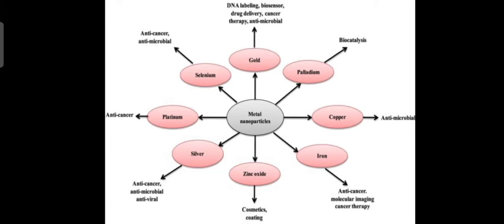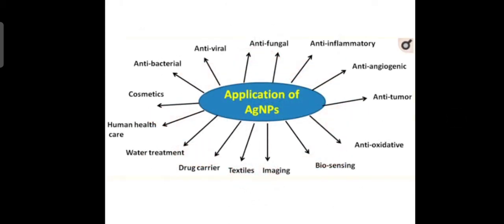Iron will be used as an agent for preparing nanoparticles. Zinc oxide for cosmetics and coating. Silver for anti-cancer, antimicrobial, and anti-viral properties. Platinum will have anti-cancer property and selenium for anti-cancer and antimicrobial. These are the various metals using which nanoparticles will be produced.